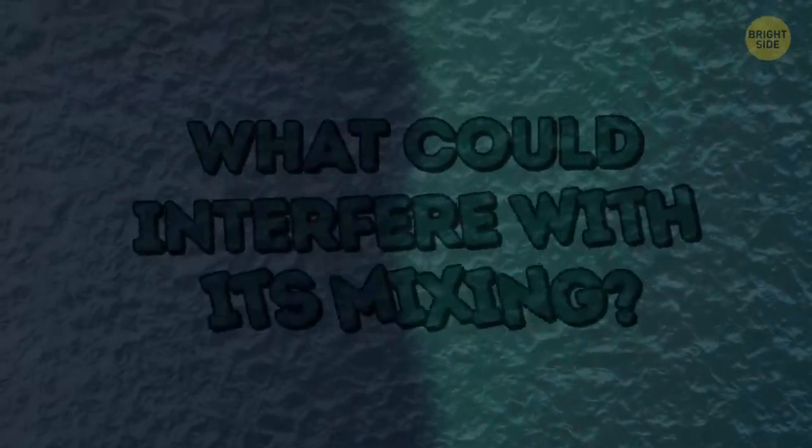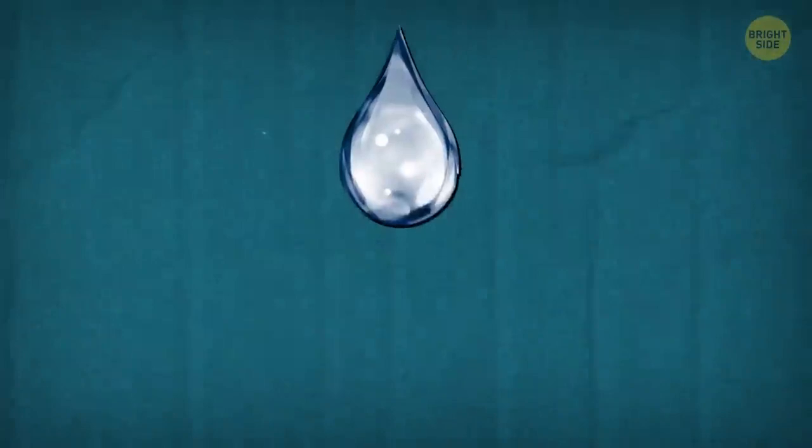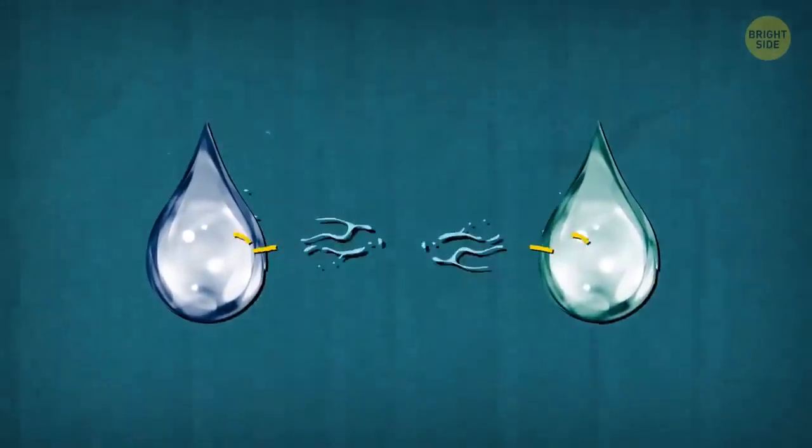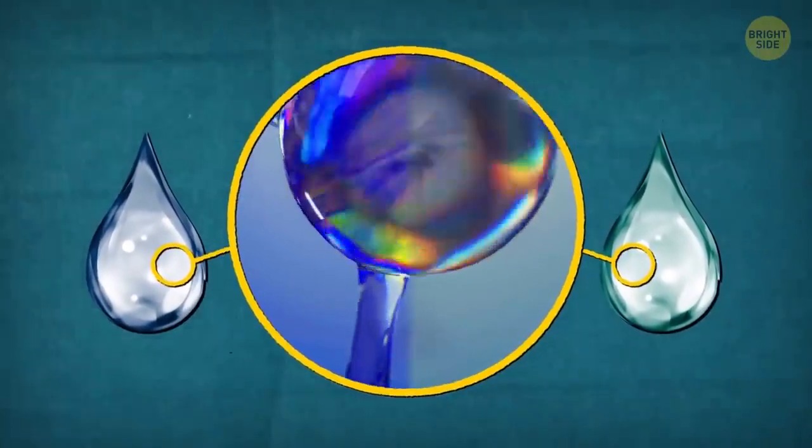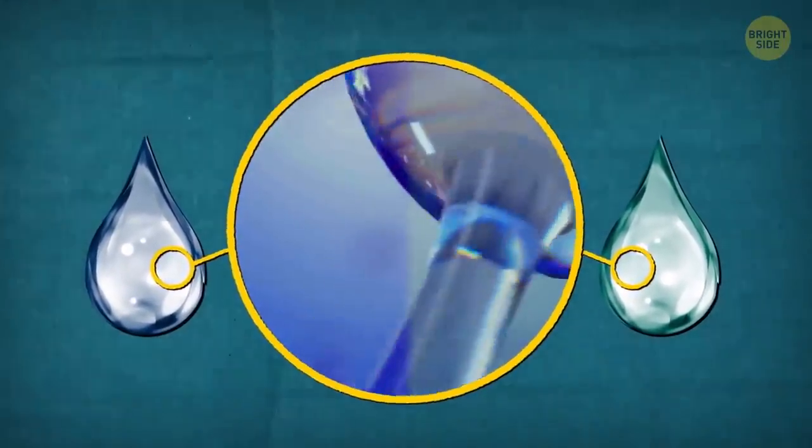We know for sure there is no invisible wall inside, and water is water. What could interfere with its mixing? The thing is that water can be different too. The Atlantic and Pacific oceans have different density and chemical makeup, the level of salinity and other qualities.